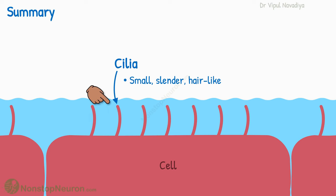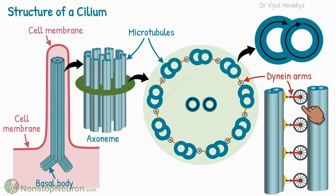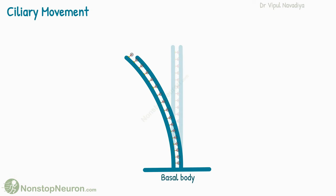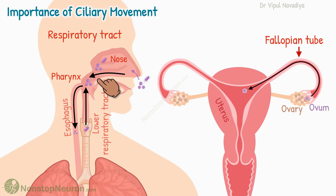Quick summary: Cilia are small, slender, hair-like structures on the surface of cells. A cilium is made up of a central axoneme covered by the cell membrane. The axoneme consists of two central microtubules and nine surrounding pairs. Each neighboring peripheral pair is connected by dynein proteins, and at the base, the microtubules are connected to the basal body. In ciliary movement, a rapid forward stroke moves the fluid forward, and a backward stroke slowly returns the cilia to the initial position without much effect on fluid. The bending of cilia is produced by the crawling of one pair of tubules over its adjacent pair. In the respiratory tract, ciliary movement moves mucus toward the pharynx; in the fallopian tube, it moves the ovum from the ovary to the uterus.